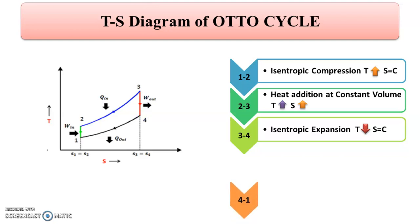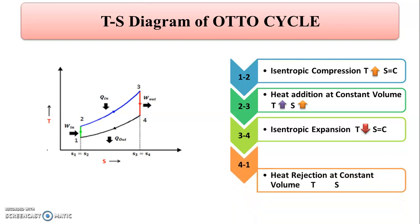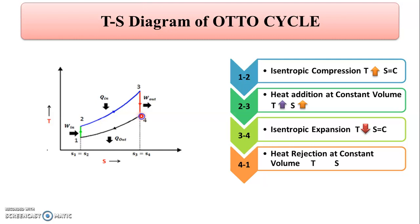Process 4 to 1 is heat rejection at constant volume. As heat is rejected, temperature decreases from T4 to T1, and entropy also decreases from S4 to S1.